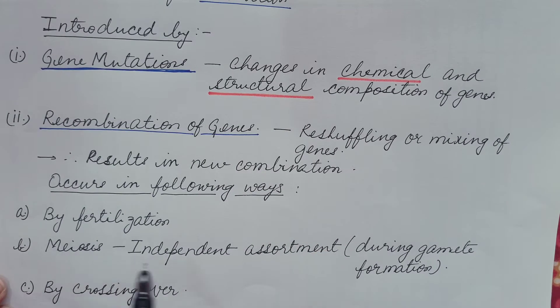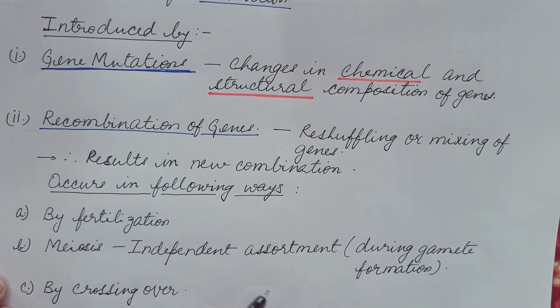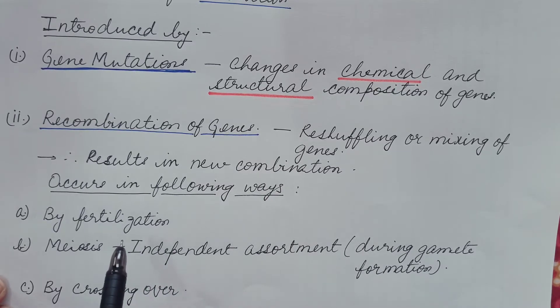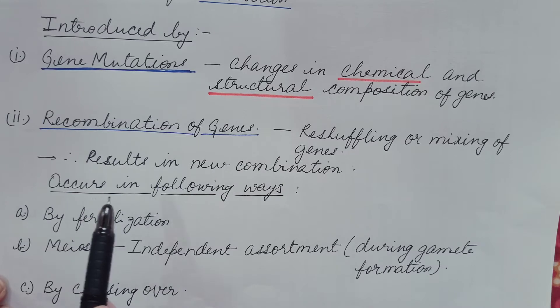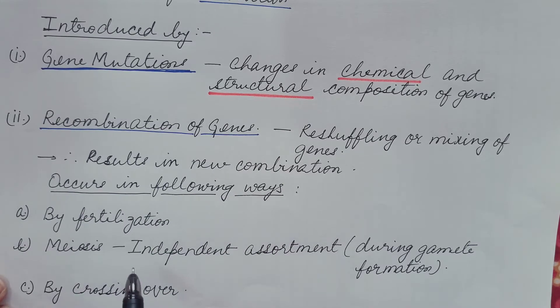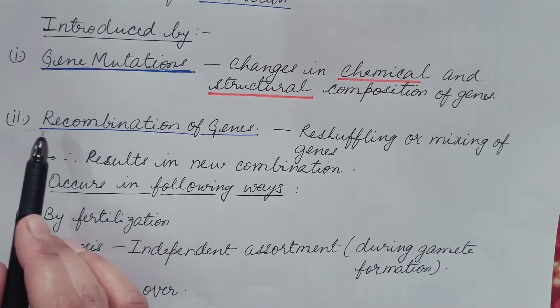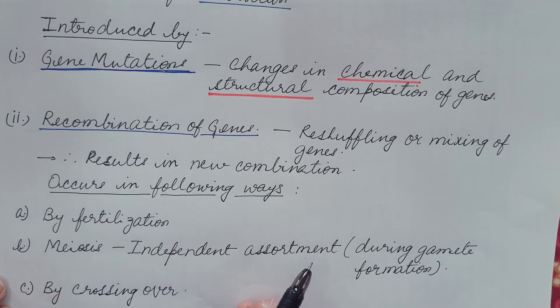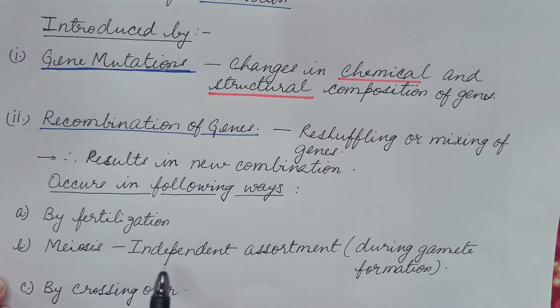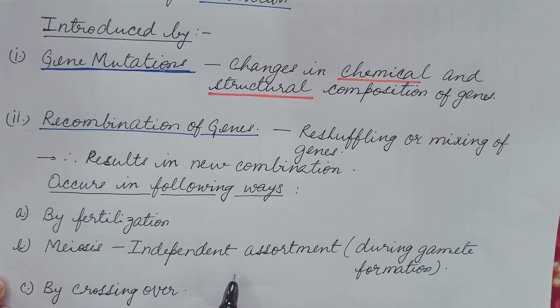Then meiosis. During the gamete formation, female and the male chromosomes assort independently of each other and this results in the new combinations. This is known as independent assortment and in this way also the recombination of genes occur. We have already discussed this independent assortment under the meiosis topic. You can refer to my video. The link is given in the description box.